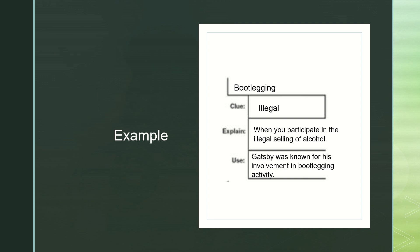For my example, I chose bootlegging. The clue is that it is illegal. For the explained portion, this is where the students would put their input — when you participate in the illegal selling of alcohol. In my use, since I wanted to tie it back to The Great Gatsby, it would be: Gatsby was known for his involvement in bootlegging activities. So Gatsby is known for the illegal selling of alcohol.